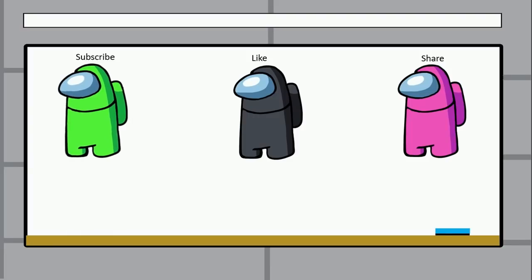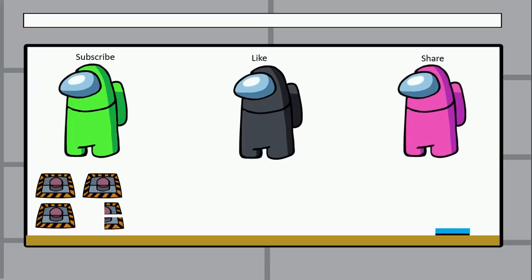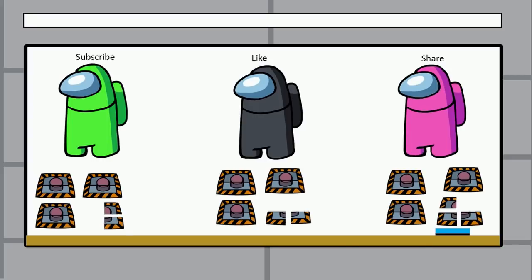And the question is: which character does not represent the mixed number? Subscribe, like, or share? So we have again the button of emergency and each character has different representations. Which is the impostor in this case?